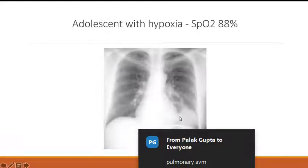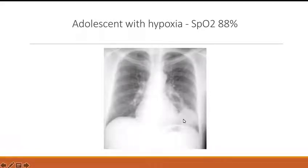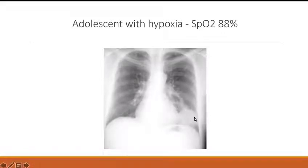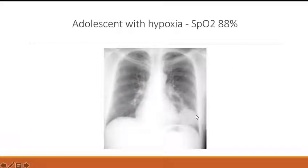Given this data that the saturation is 88%, you have to consider this as a possible pulmonary AV malformation. The next clue: contrast echo showed contrast in the left atrium after 3–4 cardiac cycles in the absence of any inter-atrial shunt. So this is a pulmonary AVM.